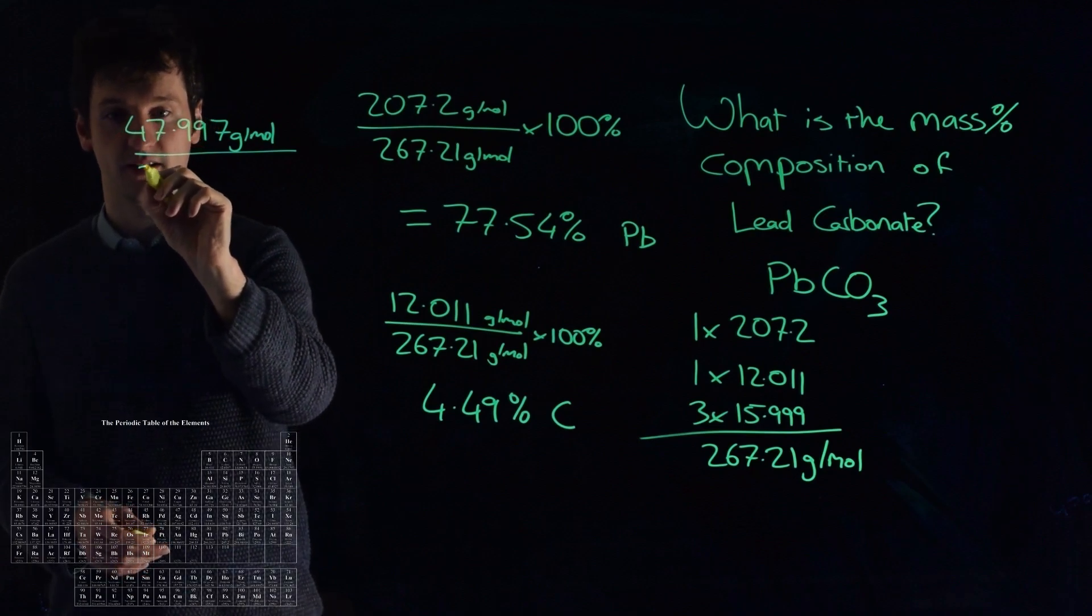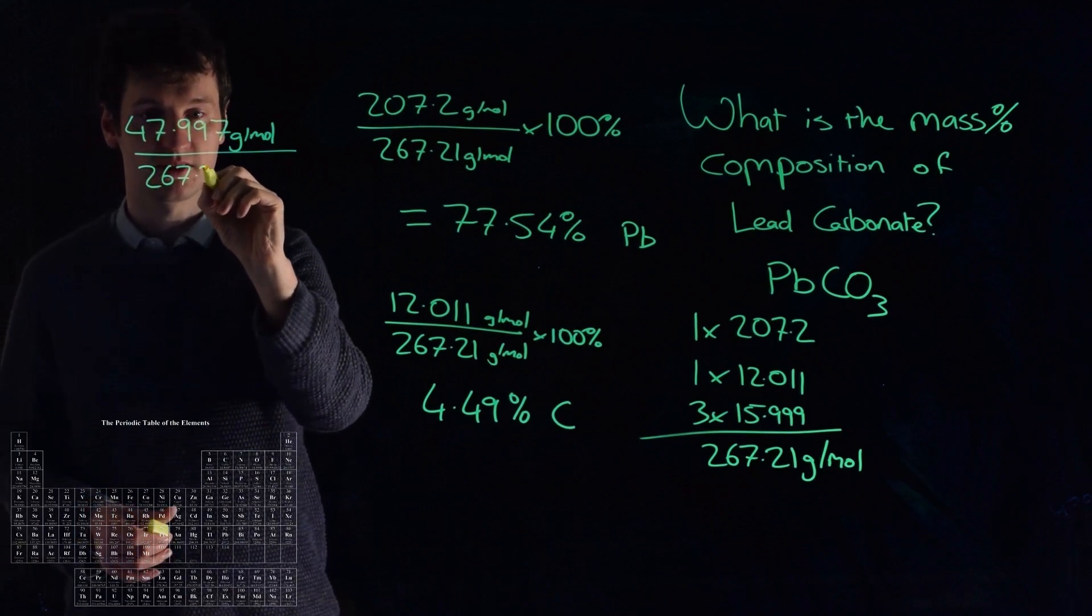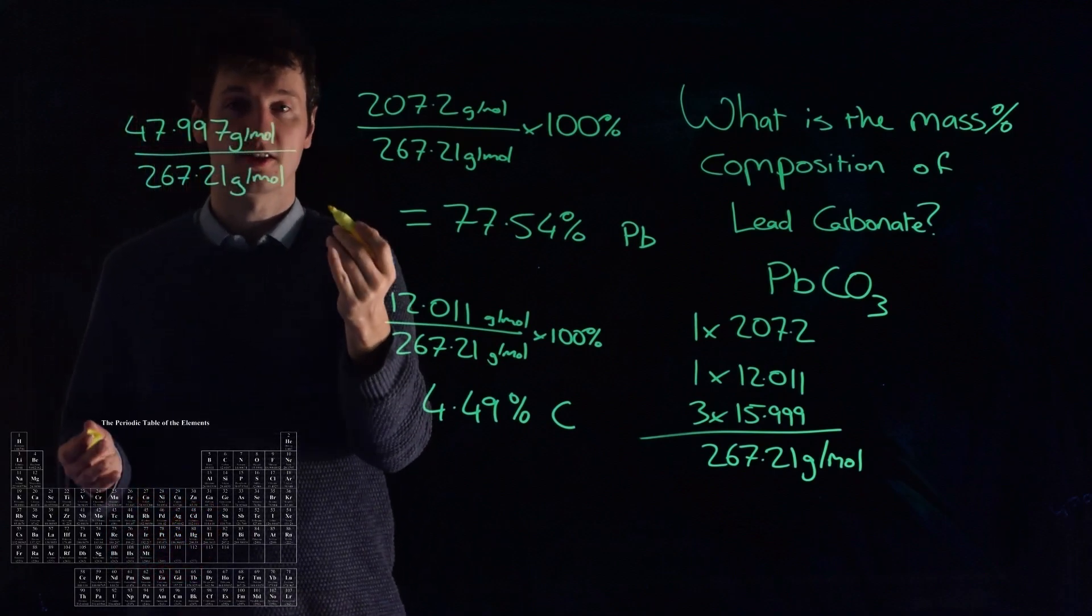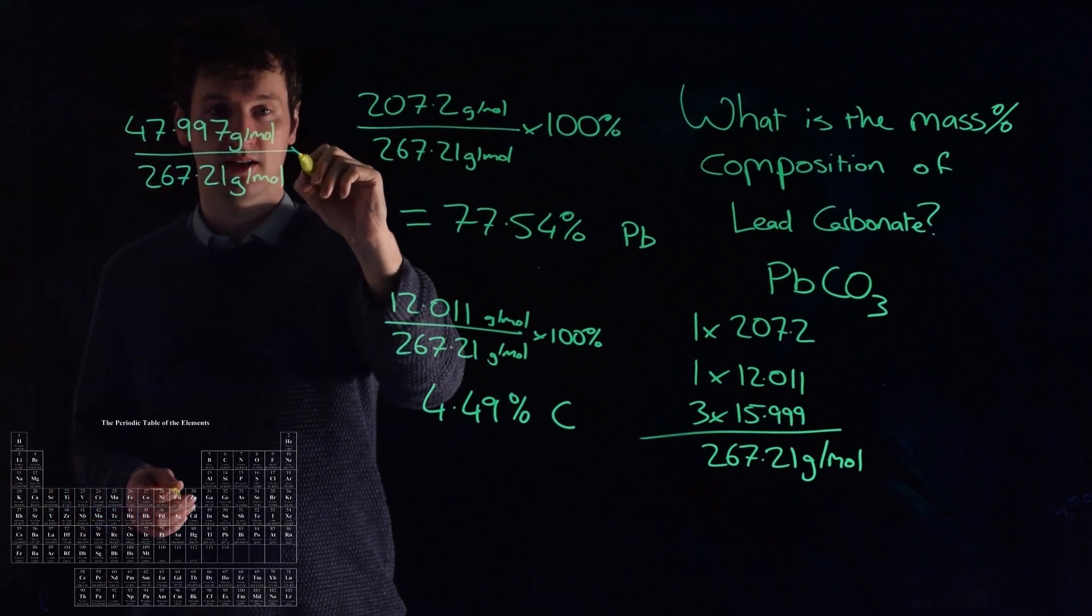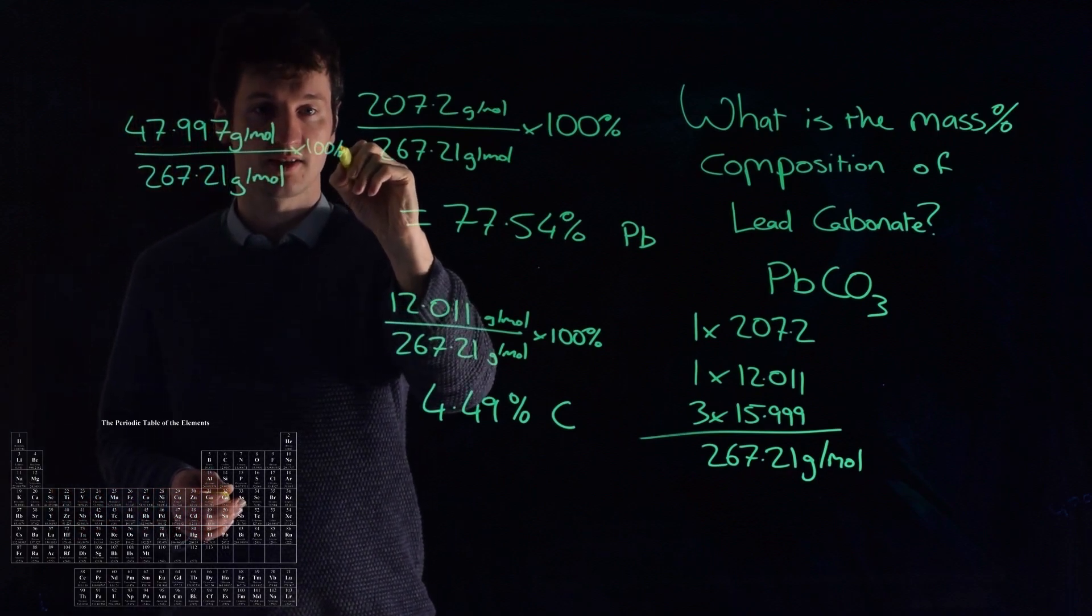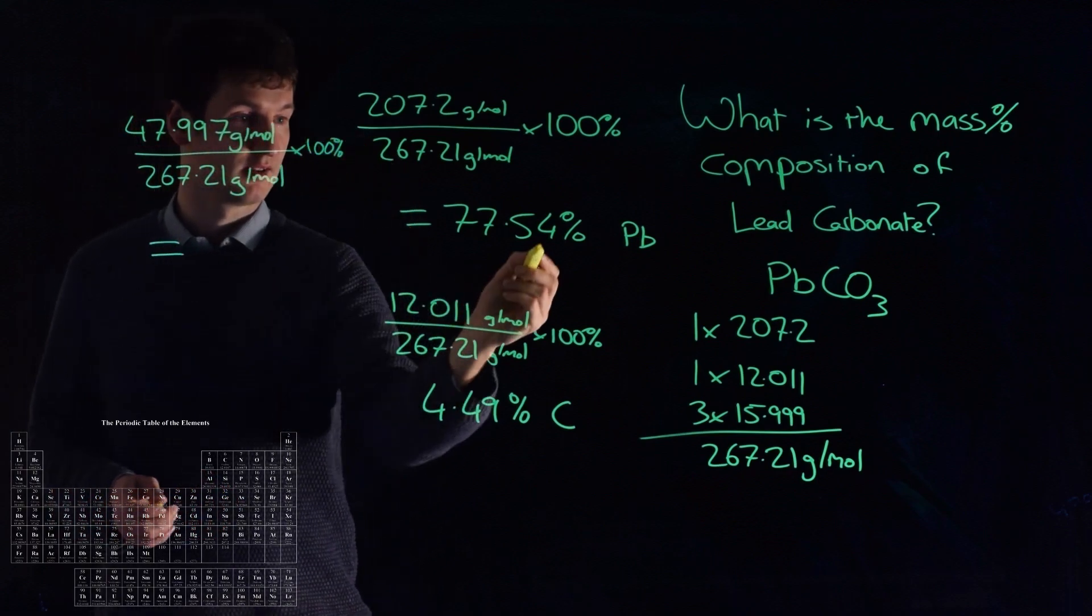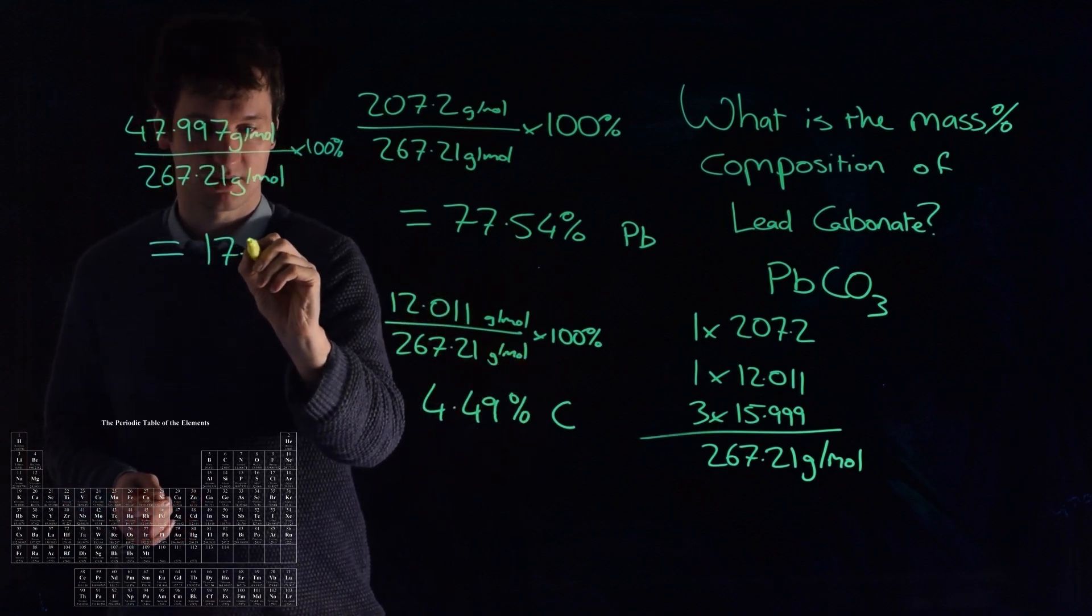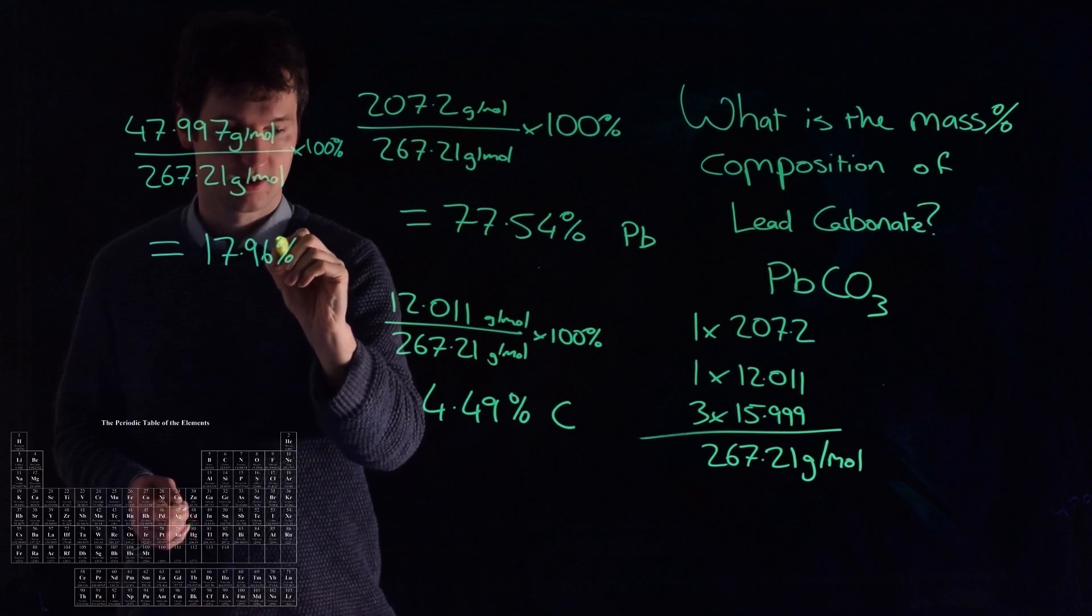Divide that by 267.21 grams per mole, that is the total molar mass, and multiply it by 100%. And that should equal to these two taken away from 100%, which it does. You get 17.96%.